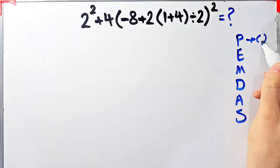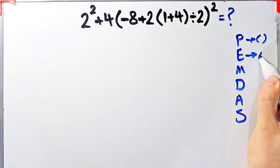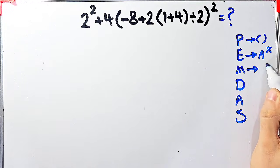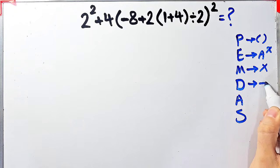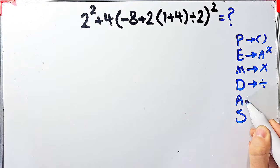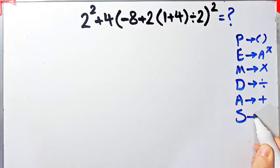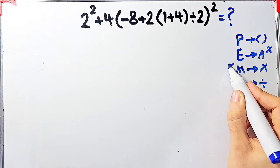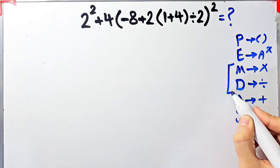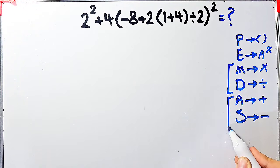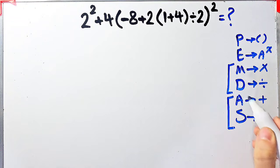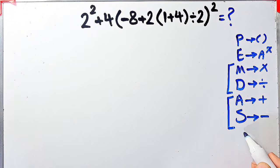E stands for exponent, M stands for multiplication, D stands for division, A stands for addition, and S stands for subtraction. Multiplication and division have the same level of priority; also addition and subtraction have the same level of priority. When we have both in an expression, we start from the left and simplify according to the PEMDAS rule.